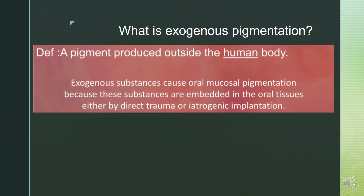Exogenous pigmentation can be defined as pigment produced outside the human body. Exogenous substances cause oral mucosal pigmentation because these substances are embedded in the oral tissues either by direct trauma or iatrogenic implantation.